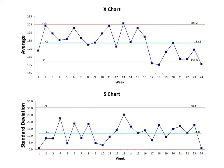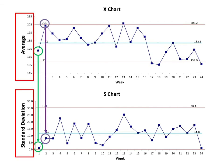To guide improvement efforts, you would want to look at those weeks where there were points outside of the control limits and identify any assignable causes for the special cause signal. For those changes that were positive, like the signals in weeks 17, 18, and 24, you would want to replicate and standardize that change. In the bottom S chart, each point is the standard deviation of all the observations for that week. For example, the first point on the S chart is the standard deviation of all the observations for week one. The standard deviation in the S chart is calculated week by week. The centerline in the S chart is the average of all of the standard deviations.